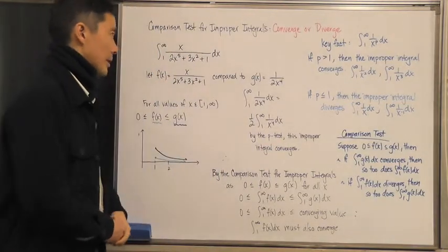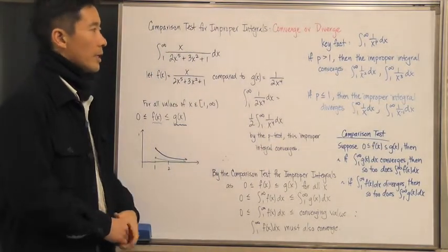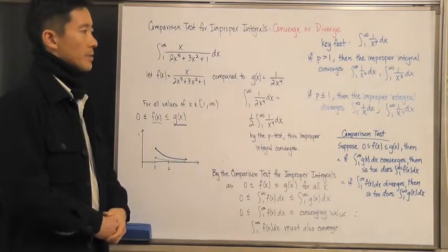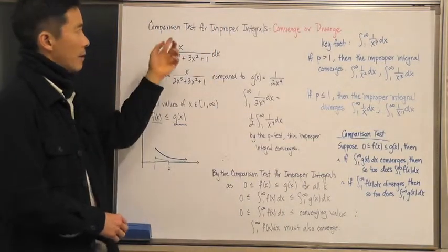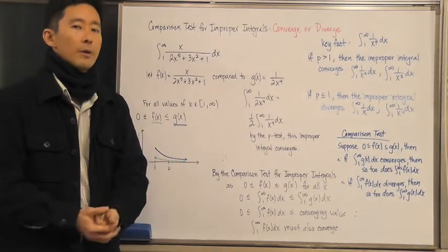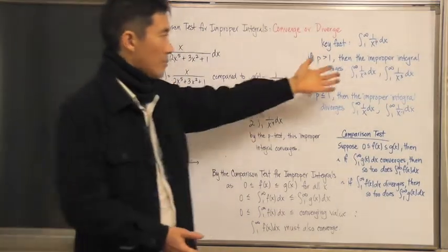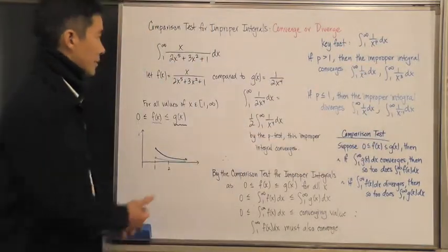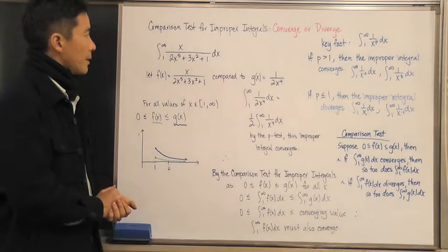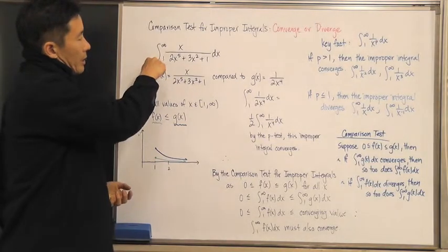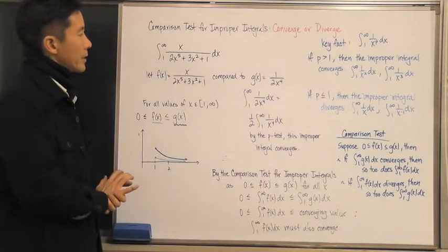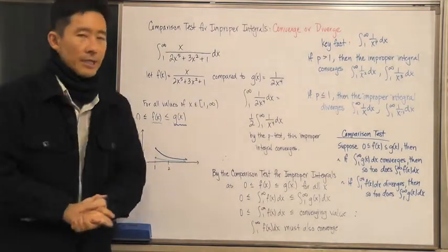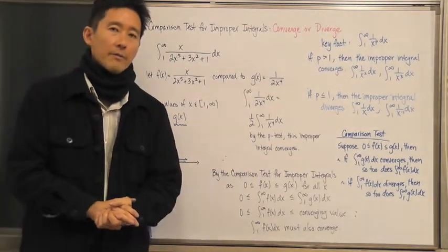Now let's take a look at the reason why we needed this key fact. We need it because we need to compare a given improper integral with an improper integral that we know converges or diverges. For example, take the integral from 1 to infinity of x over (2x⁵ + 3x² + 1) dx, and determine whether or not that converges or diverges.